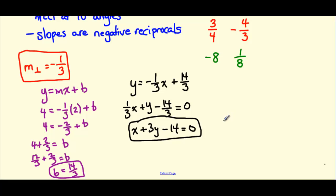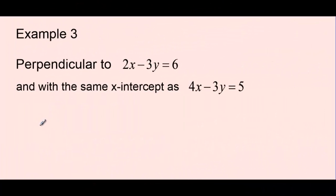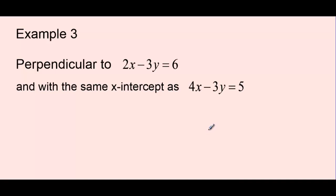That's how we can work with perpendicular lines when creating our equation. Now one final example: let's say we need to come up with an equation of a line that is perpendicular to 2x plus 3y equals 6, and has the same x-intercept as the line 4x minus 3y equals 5. These equations are not written in y equals mx plus b form — they're written in a hybrid standard form.